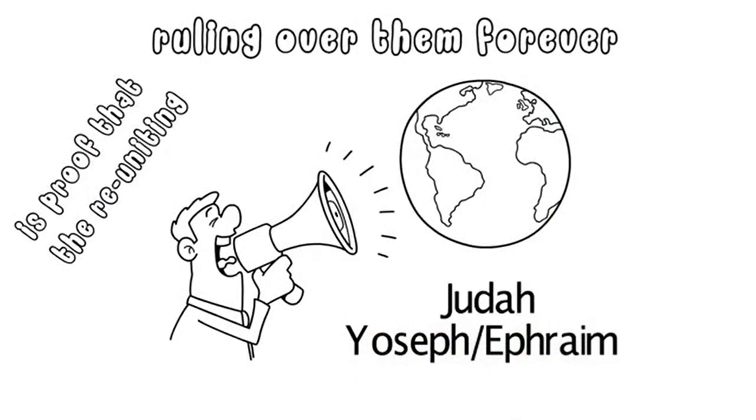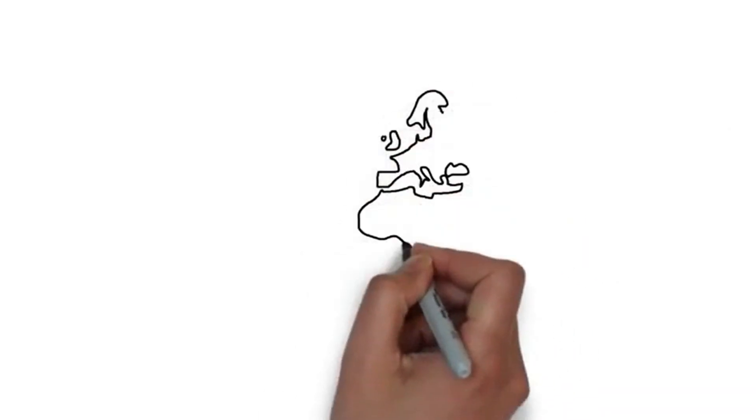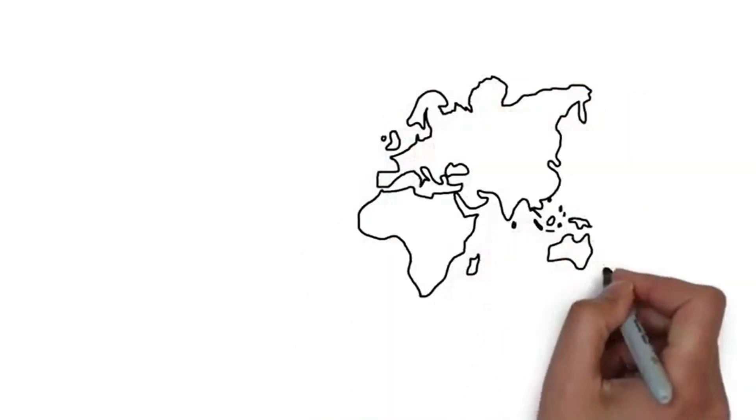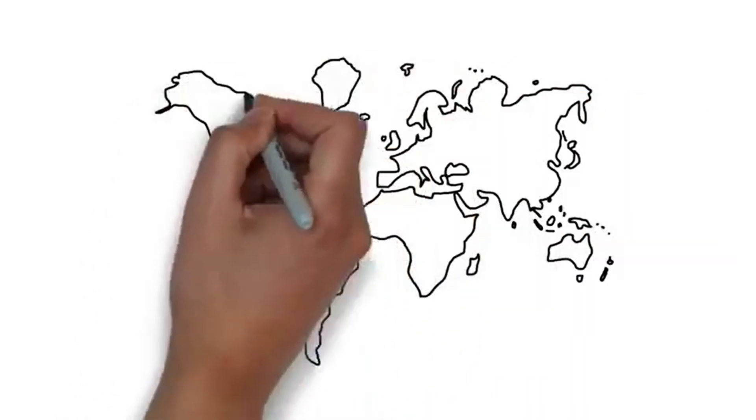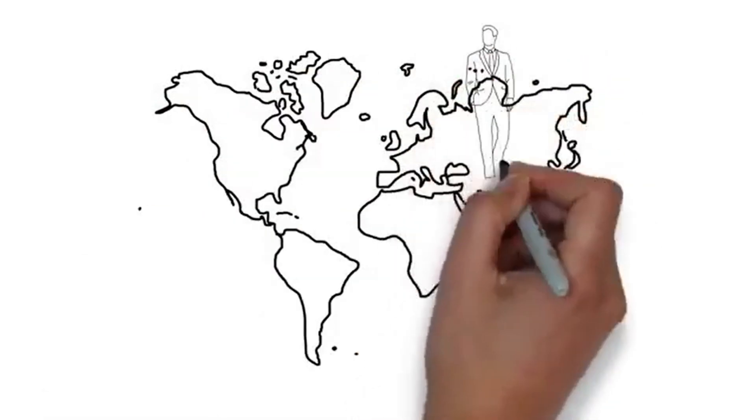Ephraim today is scattered across the world, assimilated amongst the nations, and because of divisions in faith amongst themselves is totally unrecognizable. Most do not even know their true identity in Israel.